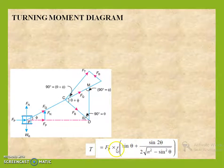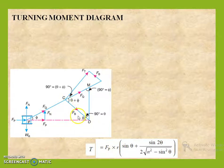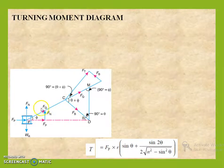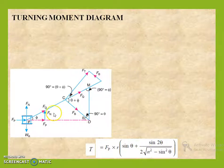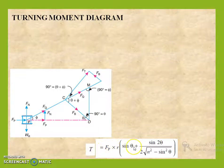The turning moment T equals Fp × R × (sin θ + sin 2θ) / (2 × √(n² − sin²θ)). Here Fp is the piston effort, R is the crank radius, and n is the ratio of crank length to connecting rod length. These three terms remain constant, so the variable here is theta, the crank angle. Theta varies from 0 to 360 degrees, so T is a function of theta.